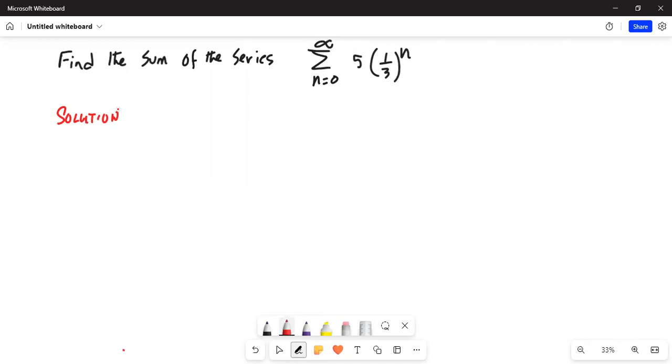The solution is sigma n equal to 0 to infinite 5 times 1 third to the power of n and that will be equal to 5 times 1 third and first n is 0.